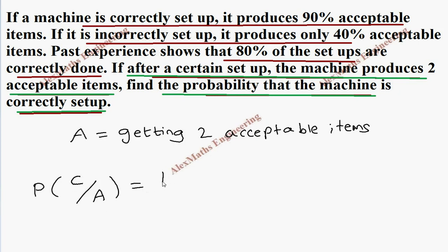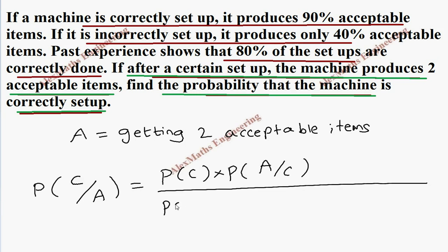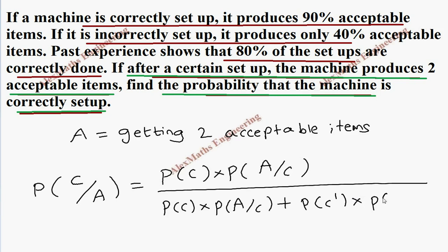We have to write the formula for this. In the numerator we write P of C into P of A given C. Now we copy the same thing in the denominator: P of C into P of A given C. The alternative for correctly set up is incorrectly set up — let's represent that by C dash. So we add P of C dash into P of A given C dash.